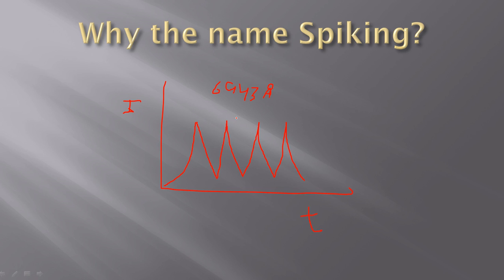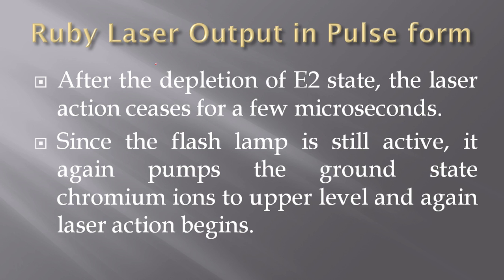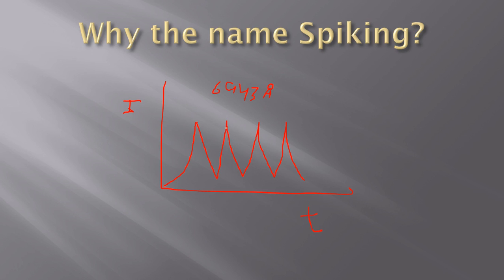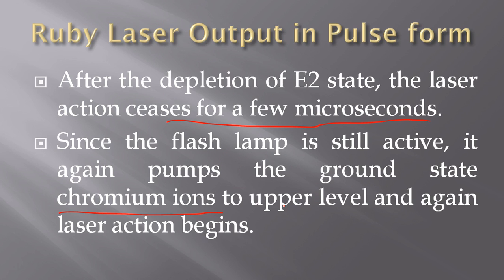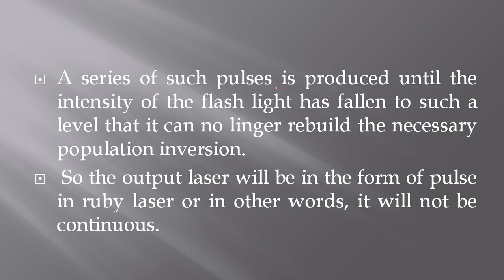Due to these peaks, the name is 'spiking' in the case of Ruby laser. In the case of Ruby laser we will not get continuous output — we will get the output in the form of pulses. After the depletion of the E2 state, the laser action ceases for a few microseconds. Since the flash lamp is still active, it again pumps the ground state chromium ions to the upper level and the laser action begins again. You get a second peak, then again there is depletion of chromium ions in the E2 level, intensity decreases, then again there is pumping, and again you get a peak. This process continues — a series of such pulses is produced.